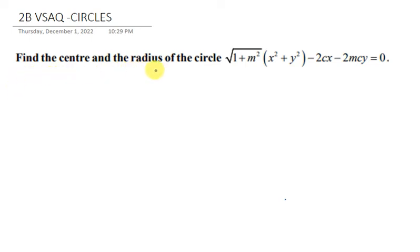The question asks us to find the center and radius of the circle: square root of 1 plus m squared times (x squared plus y squared) minus 2cx minus 2mcy equals 0.